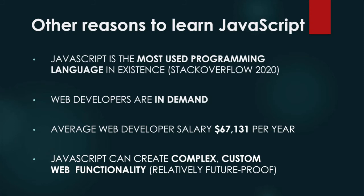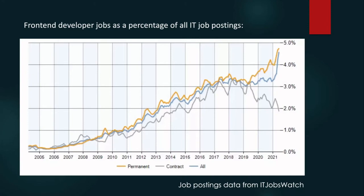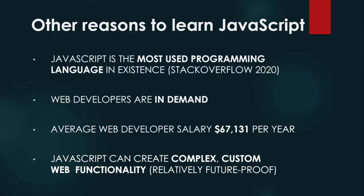Web developers are in demand in general. On the next slide, I have the percentage of front-end developer jobs posted over the years as a percentage of all IT job postings, and you can see there's been a steady increase over time in front-end developer roles, getting towards about 5% now. The orange represents permanent contracts. The average salary of a web developer is around $67,000 per year — if you're just starting out it might be a bit less, and you'll probably earn more later in your career, but this gives you a ballpark figure of what you'd expect to be earning.